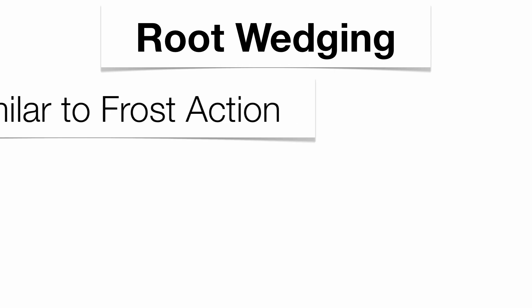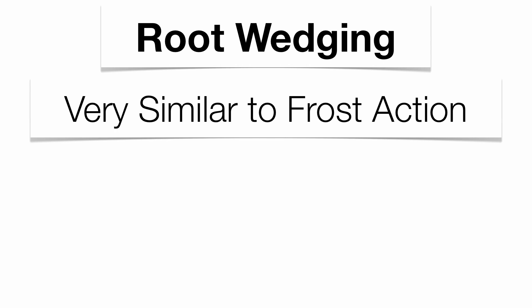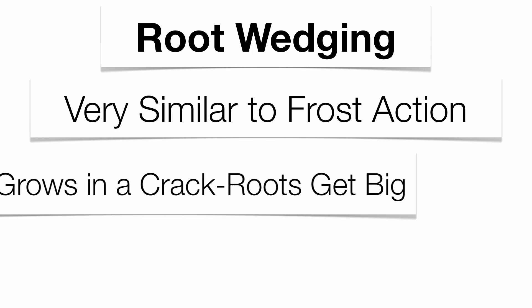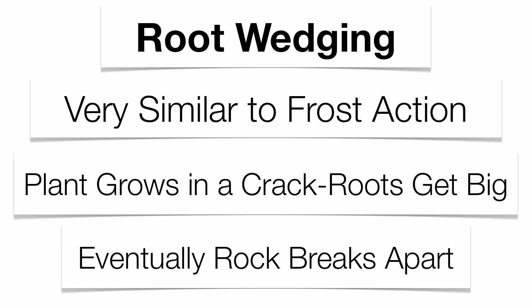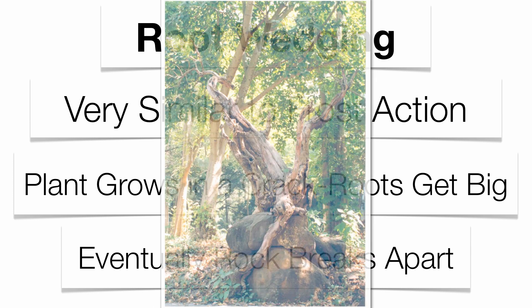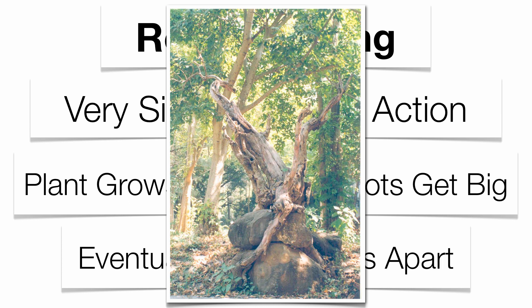The next type of physical weathering is called root wedging, and it's very similar to frost action. Plants will grow out of the crack in the rock because there tends to be quite a bit of moisture in the cracks, enough for a seed to germinate. The bigger the plant gets, the bigger the root gets, and the bigger the crack in the rock becomes — eventually the rock will break apart. You can see a tree growing out of the side of the rock.